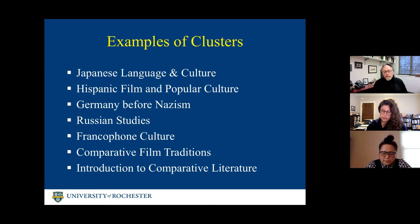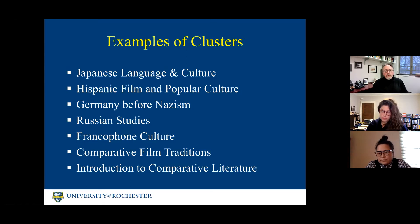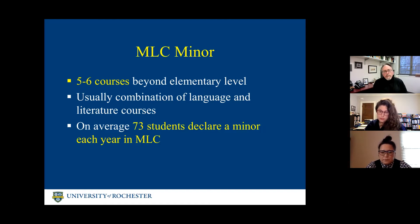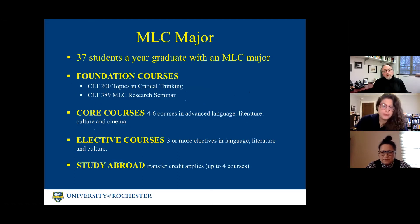Here are seven of the 45 or so clusters we offer: Japanese language and culture, Hispanic film and popular culture, Germany before Nazism, Russian studies, Francophone culture, comparative film traditions, and introduction to comparative literature. If you have time to take some more courses, two to three courses beyond your cluster might allow you to declare an MLC minor, depending on how you come in. About 73 students declare a minor each year in MLC.